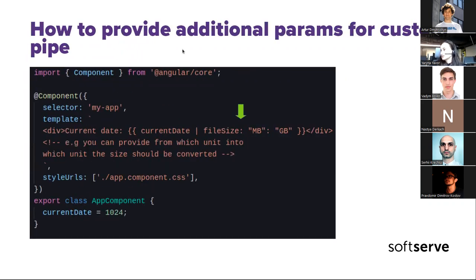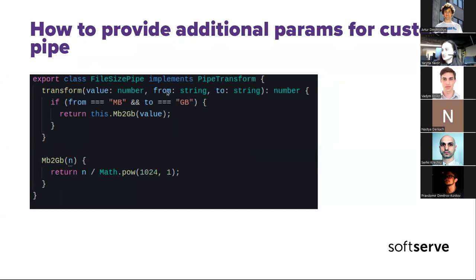To provide additional parameters to a custom pipe, you write them after the pipe name, splitting parameters by colons. Inside the transform method, these parameters come after the first value parameter — second, third, and so on. For example, if you have a string value, you can slice from one letter to five letters and manipulate the data as needed.